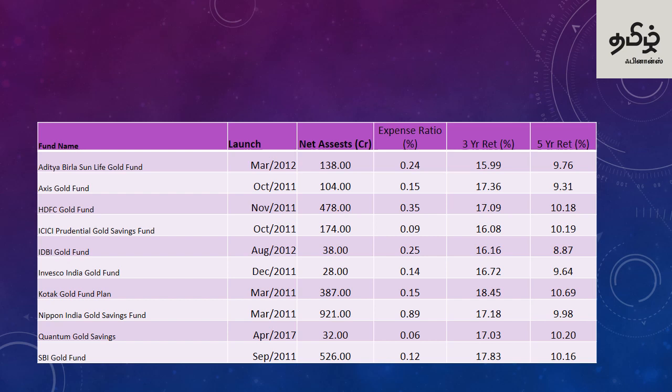Each fund has a different Expense Ratio. For example, one gold fund has an expense ratio of 0.15% with an 18.45% 3-year return and 10.69% 5-year return. For Nippon India Gold Savings Fund, the expense ratio is 0.18%, with a 17.18% 3-year return and 9.9% 5-year return.